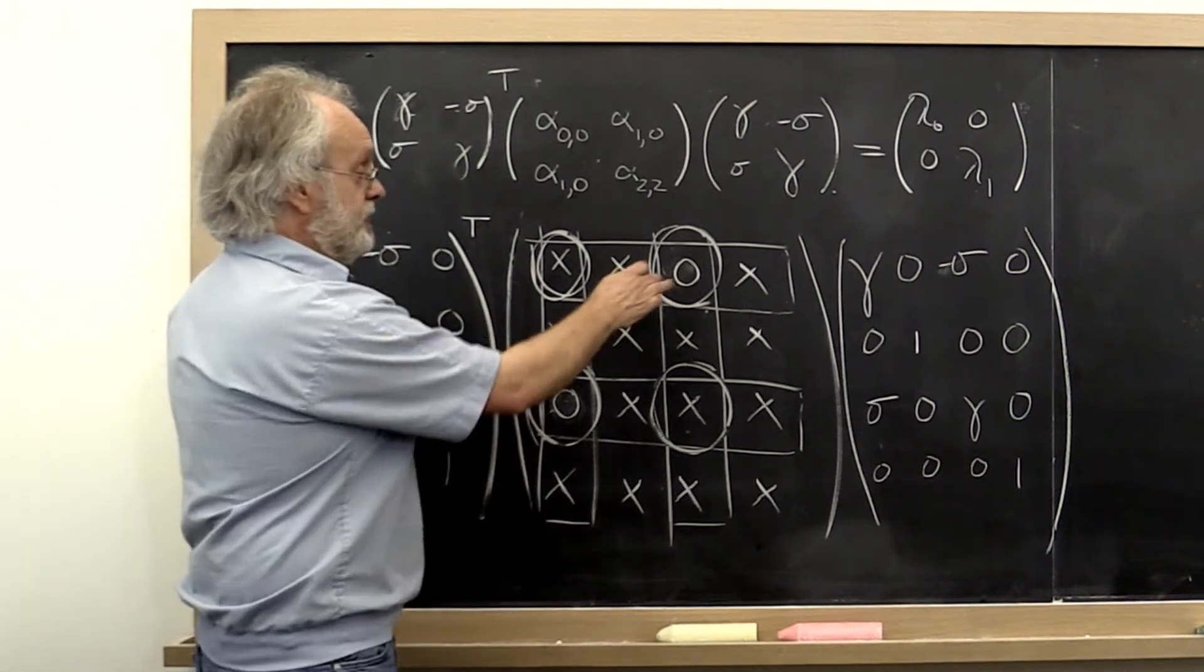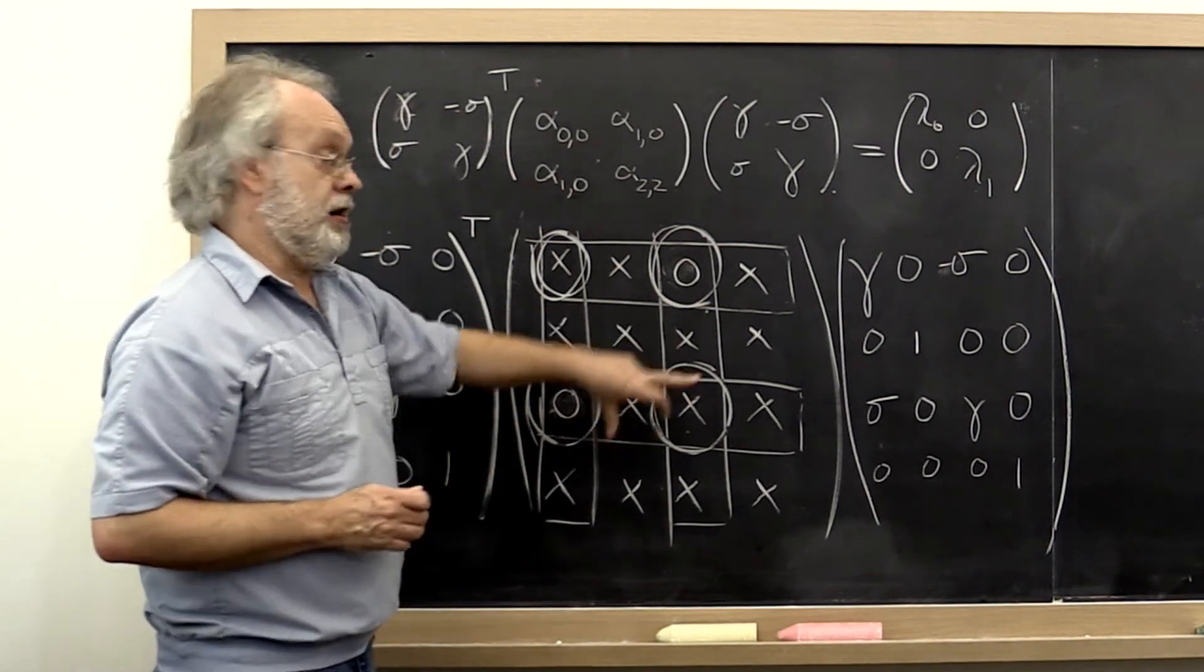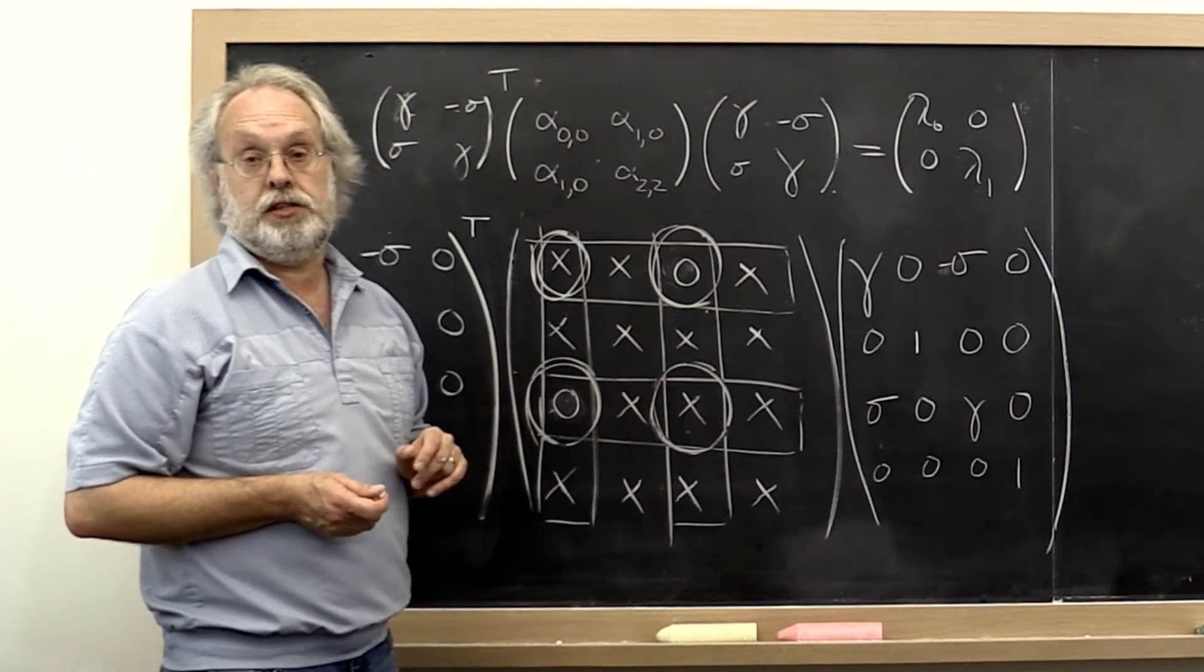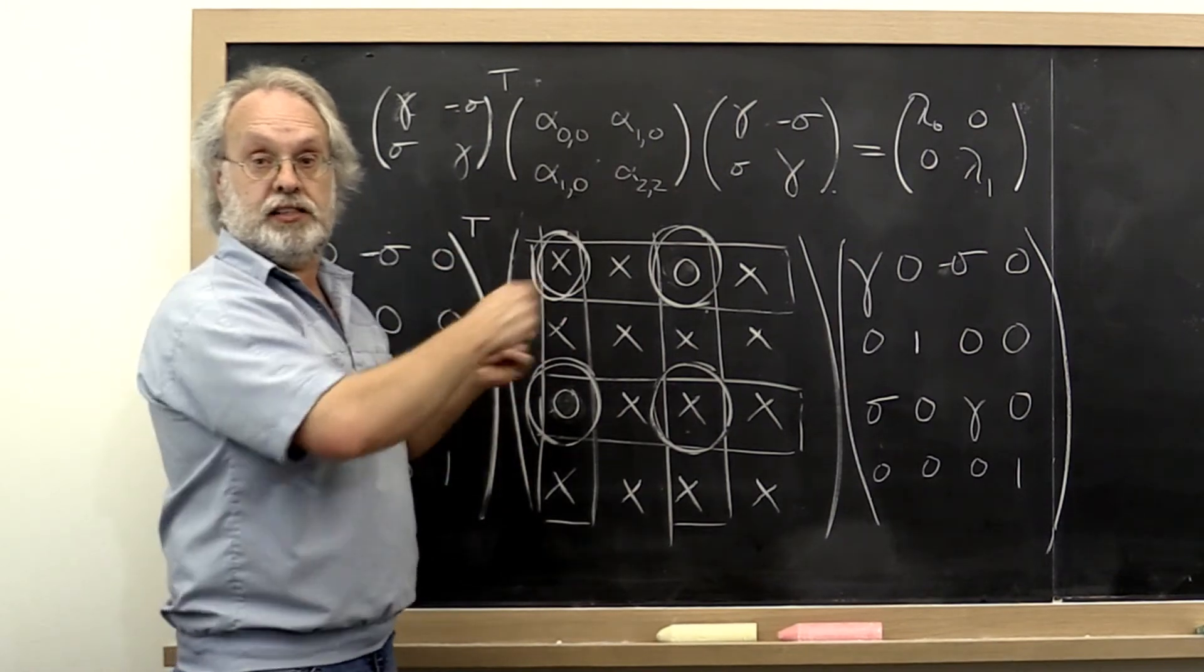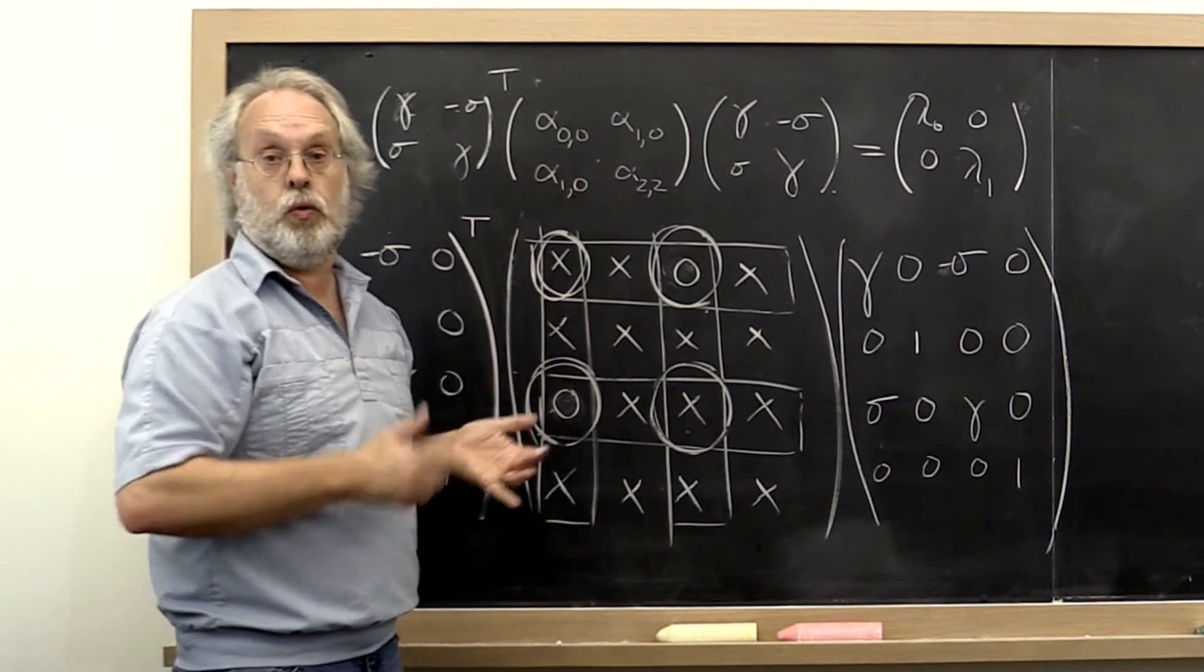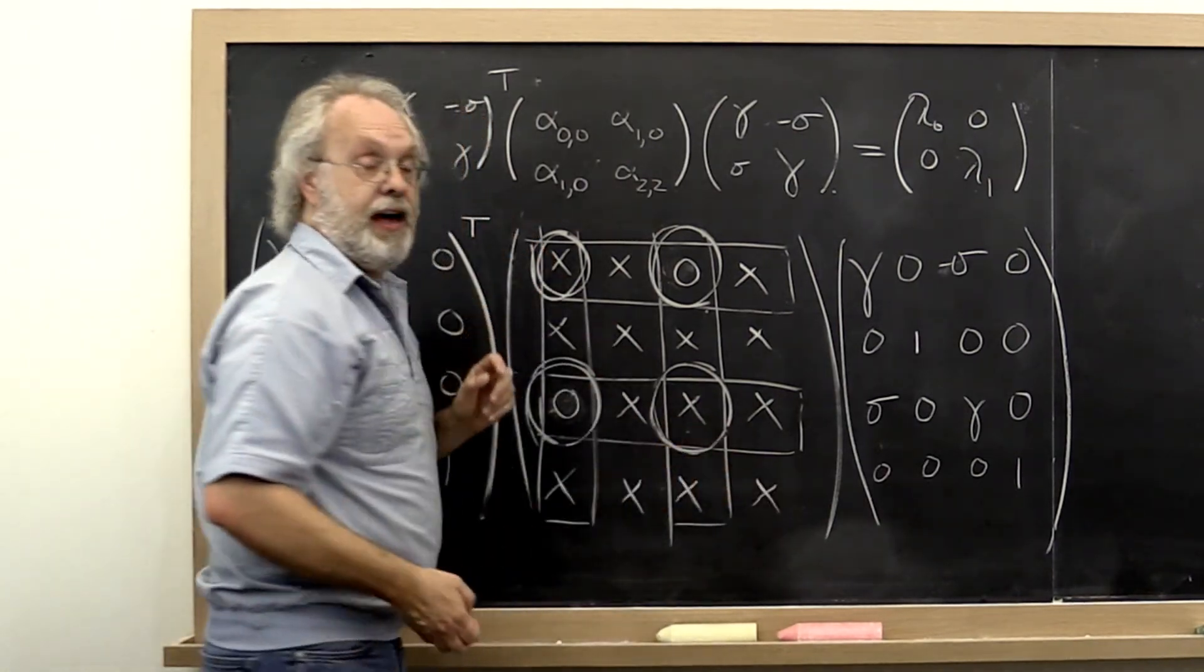Now once you have zeroed out these, then you go and you zero out another pair of off-diagonal entries. Symmetric pair. And you keep doing that. Now if you do this in the right order, then eventually this matrix becomes diagonal.